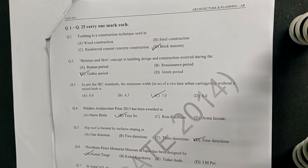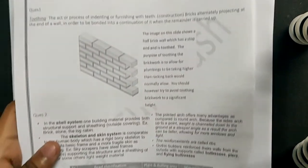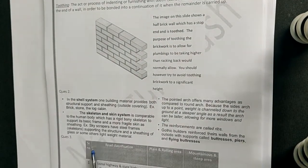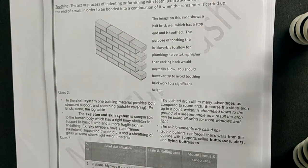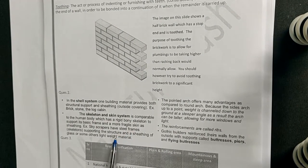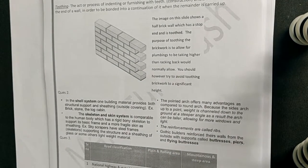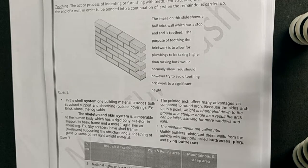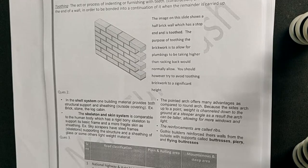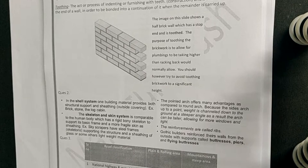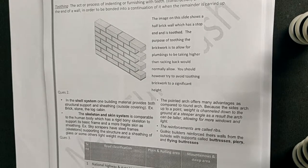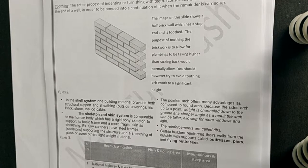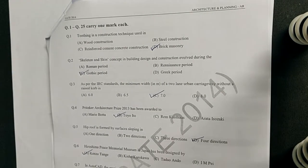The next question: the skeleton and skin concept in building design and construction evolved during which period — Roman, Renaissance, Gothic, or Greek? The answer is the Gothic period. Buttresses, piers, and flying buttresses act as a skeleton system. The dome transfers its load to buttresses and piers, which transfer the load to the ground via flying buttresses. This acts as a skeleton, and all the masonry around it acts as a skin — that is why in the Gothic period you see many buttresses, spires, arches, and domes.